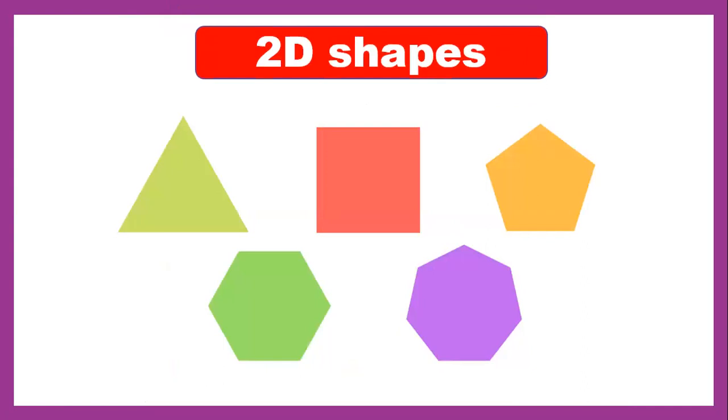These are the 2D shapes. This triangle has three sides. This is a square that has four sides, four equal sides. This is a pentagon that has five sides: one, two, three, four, five.